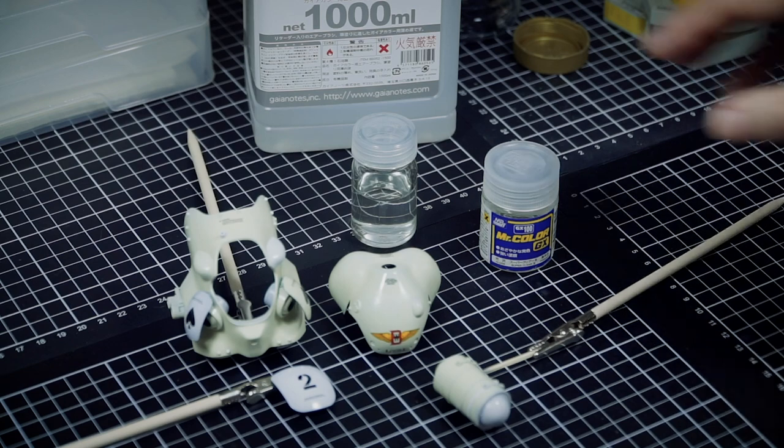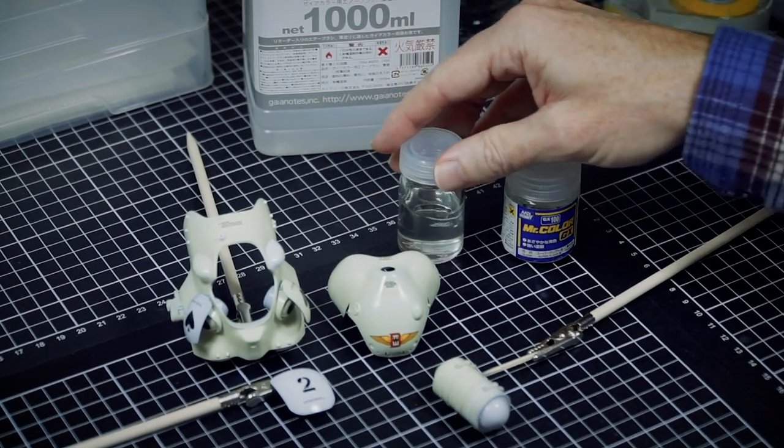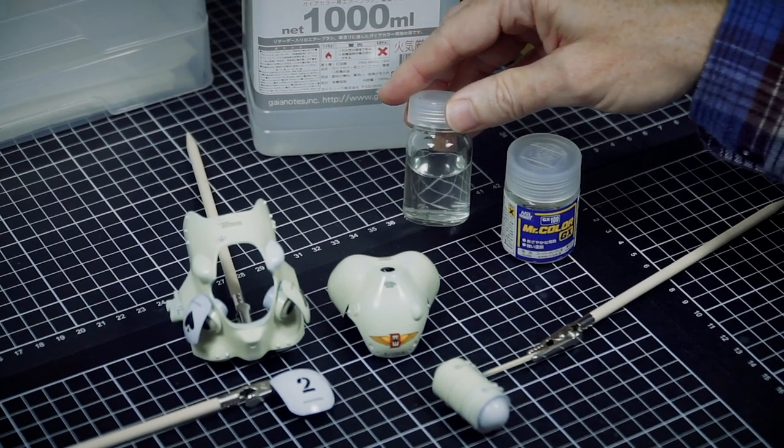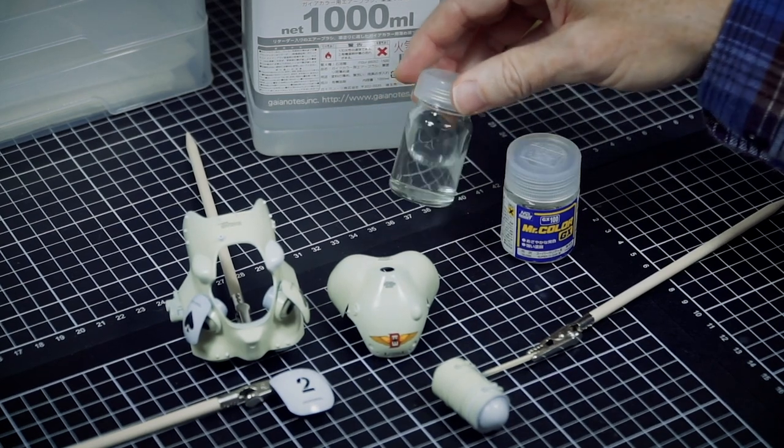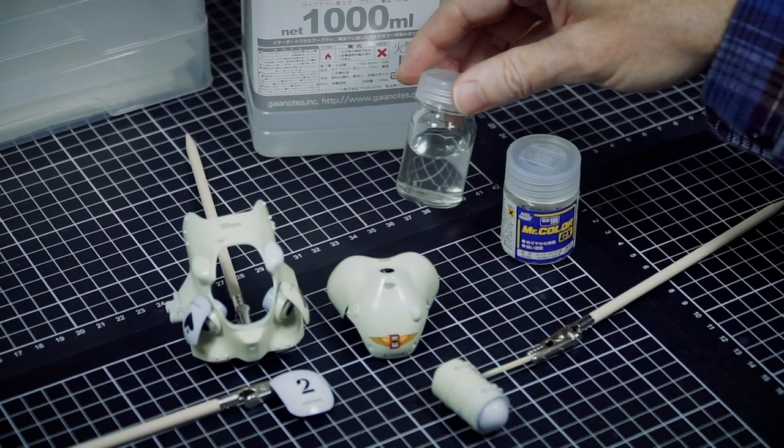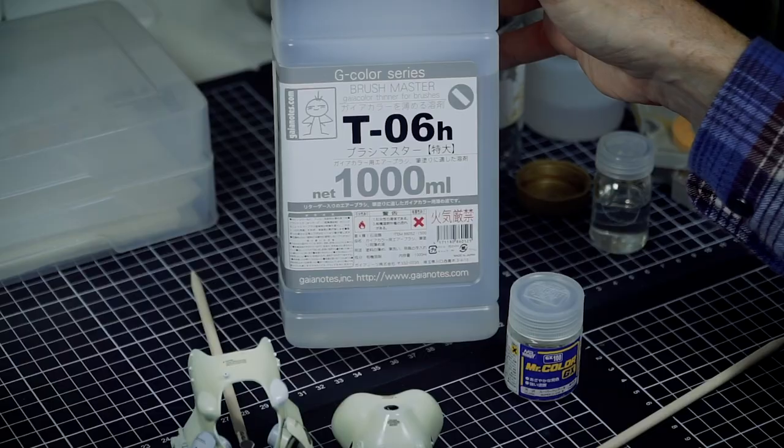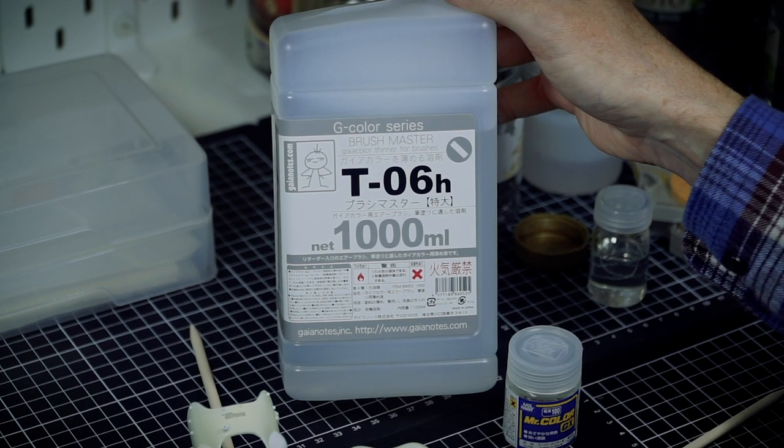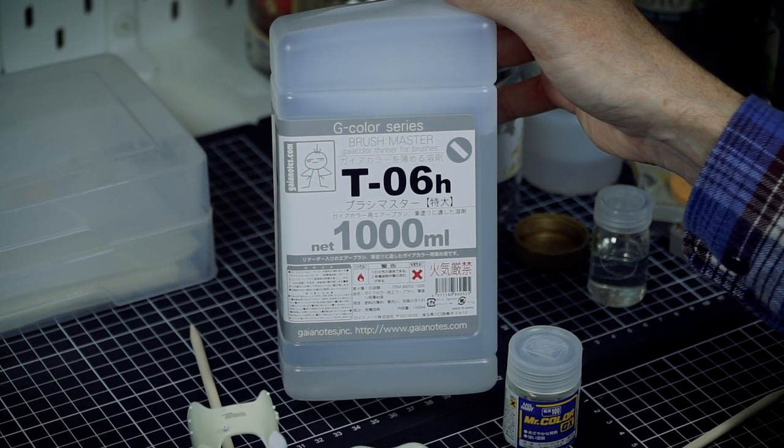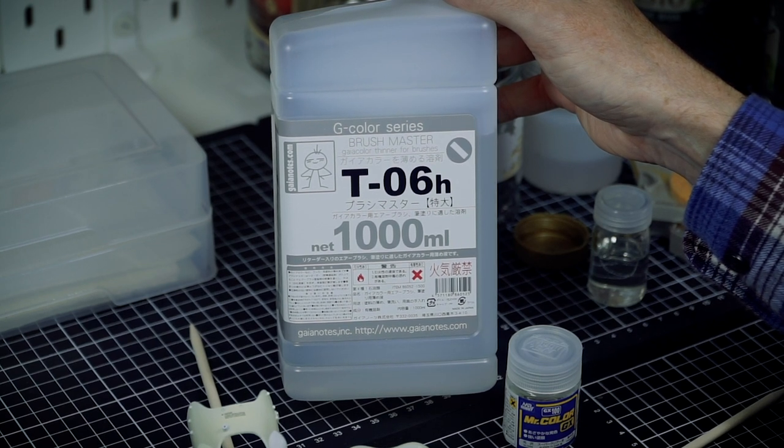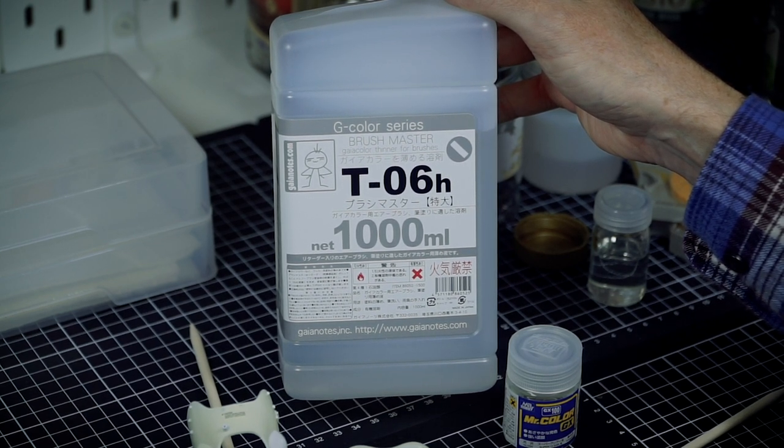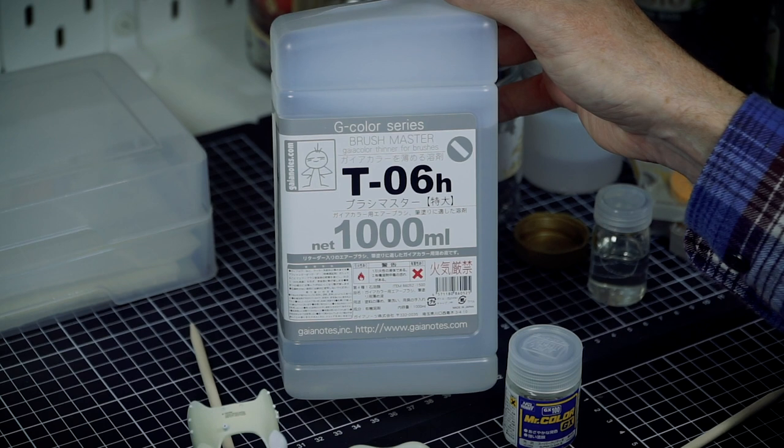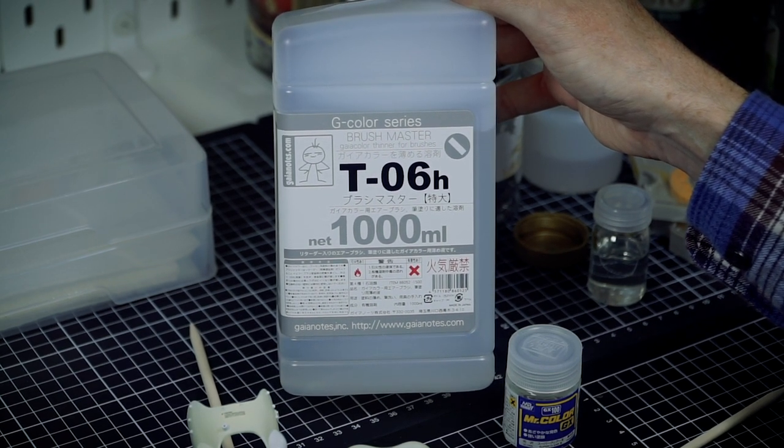Now just to give you some tips on it, I think that one of the challenges that some folks might have with using clears is that they may thin them a little too much. This one I've thinned it 50-50 and you can see it's relatively thin but it's thicker than some other paints. Glosses are just a different creature. I've thinned it 50-50 with this T06 Brushmaster thinner from Gaia Notes. It's almost identical to the T07 that I often show but it has less additives. So when I'm airbrushing this one it does feel slightly cleaner. So I often use this one for clear coats and lighter color finishes.